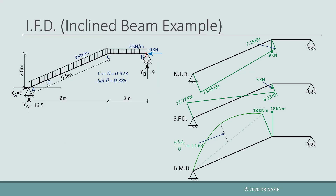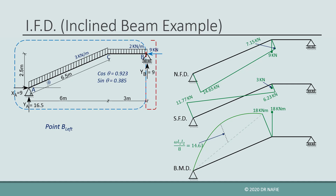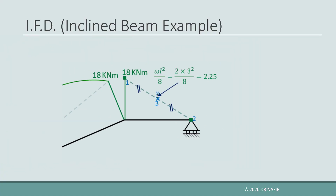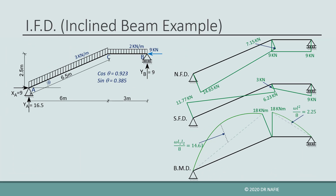Finally, we evaluate the internal forces at the point just to the left of the support at B. The normal force will be negative 9 kN as before. The right part only contains one vertical force, the reaction YB of 9 kN pointing upwards, so the shear force will be negative 9 kN. Because all the forces in the right part pass through point B, the moment about B will be zero. The moment value is connected to that calculated at the previous step using a parabola. After connecting all the calculated values, the final diagrams are produced.